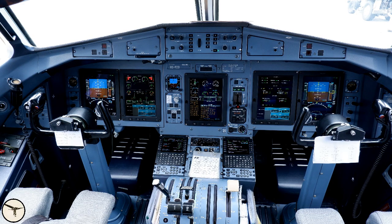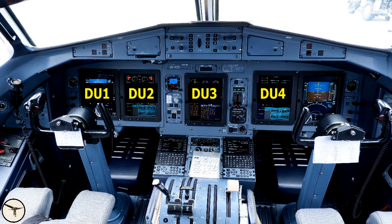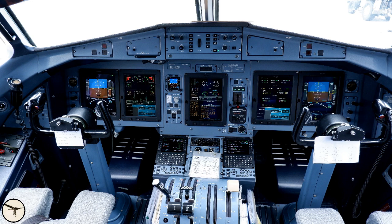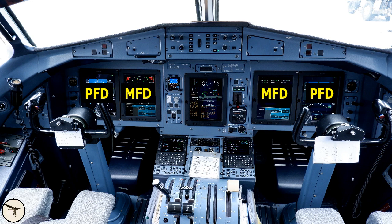The instrument panel is dominated by five LCD screens which are called display units, or DUs. They are numbered 1 to 5 from left to right. In front of each pilot there are two display units, the PFD and the MFD. In the center of the panel there is an EWD.